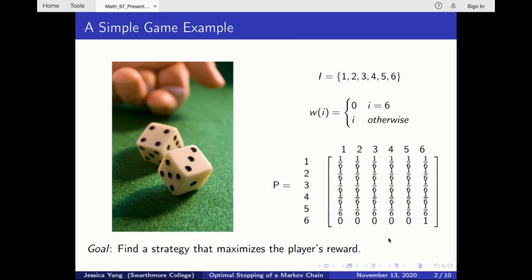I will now use this simple game to introduce some key concepts central to our problem. In this game, the outcome of each roll can be represented by a Markov chain. The values that a Markov chain can take are called states, which in this example are 1, 2, 3, 4, 5, and 6.